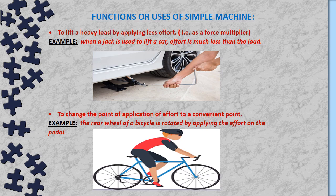The first function or use of a simple machine is to lift a heavy load by applying less effort. In such a case, the machine acts as a force multiplier. For example, when a jack is used to lift a car, the effort is much less than the load. In the diagram, a person is lifting the car with the help of a jack, applying very little effort compared to the weight of the car — the effort is multiplied to overcome the load.